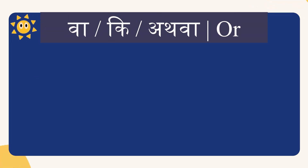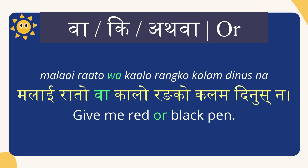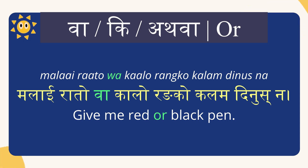Another conjunction is wa, ki, or athava — all three words mean 'or'. Let's do an example of each one. Malai rato wa kalo rangko kalam dinusna — give me red or black paint. Here, na is a particle in Nepali; we use these particles to make sentences polite.